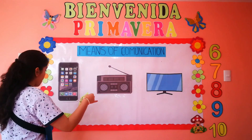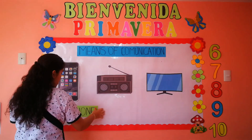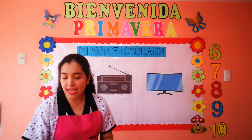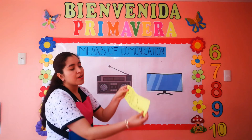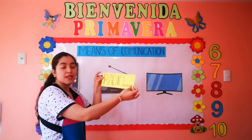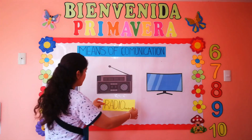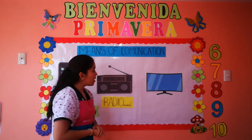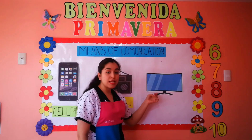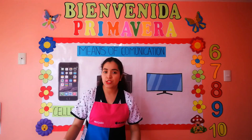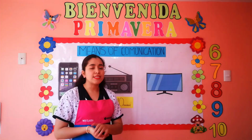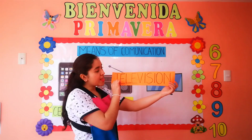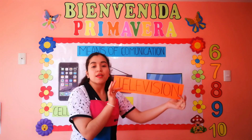Muy bien, vamos a pegarlo por aquí. ¿Y cómo se dirá radio en inglés? Se dice radio. Repite: radio. Muy bien, vamos a pegarlo aquí. Y por último, este es un televisor. ¿Y cómo se dice televisor en inglés? Se dice television. Repite: television.